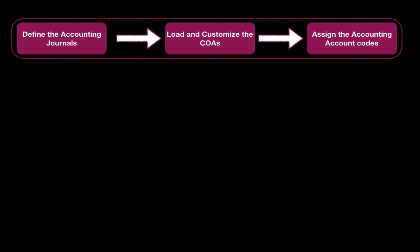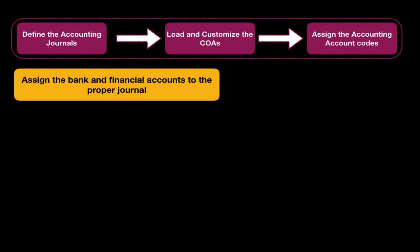The next step is to assign your bank accounts and financial accounts to the proper accounting journal. For example, the cash financial accounts need to be assigned to the appropriate journal. As we saw in the previous lessons, when we created the bank accounts — if you go and modify it, you will find the option to assign that financial account to the accounting journal, so every entry of that bank account will be logged into the proper accounting journal.